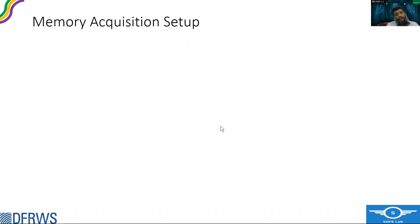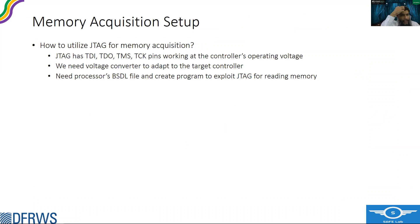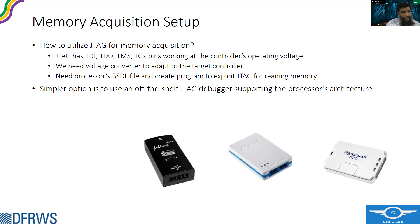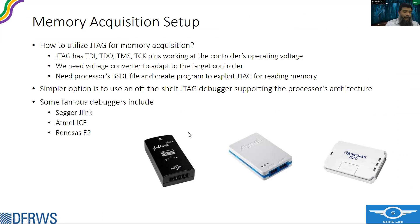The next step is the memory acquisition setup. Once the JTAG pins are found, JTAG has a few pinouts that work at the controller's operating voltages, so voltage converters may be required, along with BSDL files and programs to exploit JTAG for reading memory. Instead of that hassle, the simpler approach is to use off-the-shelf JTAG debuggers that have extensive libraries for the processors they support. These are some well-known debuggers that we can choose after verifying they support our target architecture.